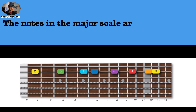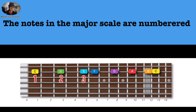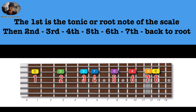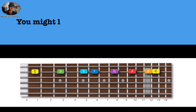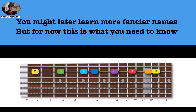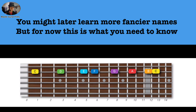Each note in the major scale has a number. The first is the tonic or the root, and then we have the second, third, fourth, fifth, sixth, and seventh, back to the root. You might come across some fancier names in your research, but for now this is all you need to know.